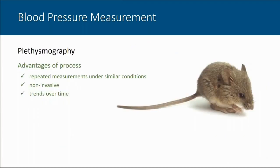The primary advantage of plethysmography is that we can perform repeated measurements in an individual animal over time under similar conditions. We can have a cohort of animals, look at them before a drug treatment or intervention, and then track systolic arterial pressure over time with continued treatment and following discontinuation. It's non-invasive, we can test several animals at a time with multiple apparatuses, and it is sensitive to detecting trends in systolic arterial pressure over time.